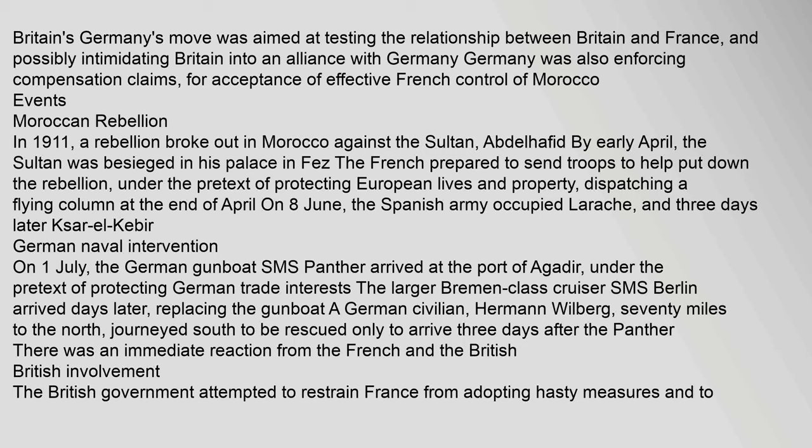In 1911, a rebellion broke out in Morocco against the sultan, Abdelhafid. By early April, the sultan was besieged in his palace in Fez. The French prepared to send troops to help put down the rebellion, under the pretext of protecting European lives and property, dispatching a flying column at the end of April.